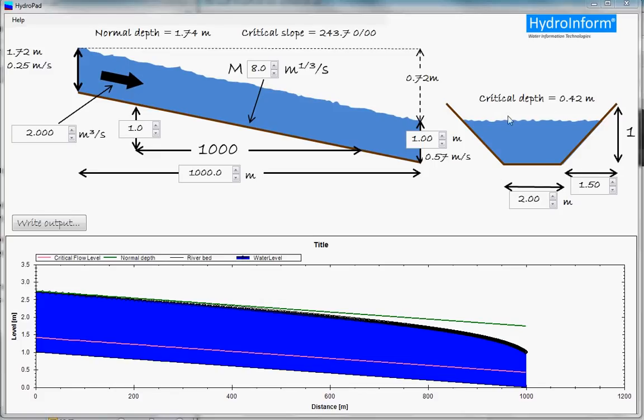In this view here, at the right side, you can see the shape of the cross-section, where you can change the bottom width, and you can change the slope of the sides. And finally, down here, we have the calculated surface profile.